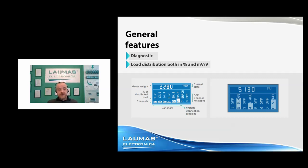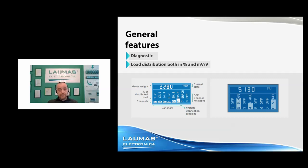Another big advantage of having individual channels is that if you're using four channels for your weighing system and one becomes faulty, you can disconnect the load cell from that channel and connect it to an unused channel. You can continue working with that system and that amplifier — there's no need to replace the weight transmitter.